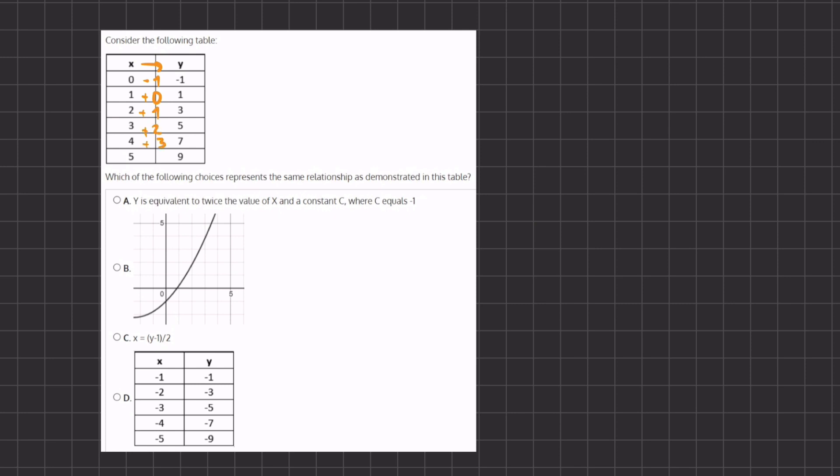With every jump, every transition, the number that we are adding grows by 1. This will be our pattern for the table. Now let's take a look at our options.